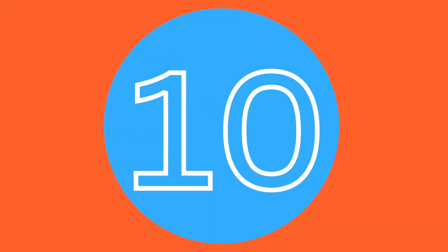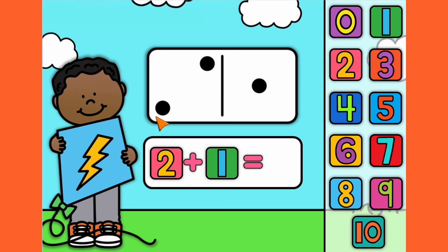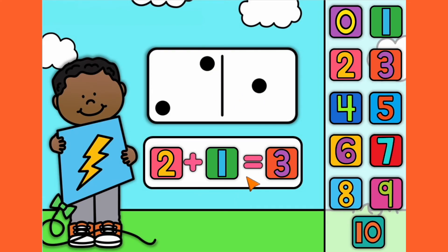Number 10. 1, 2, 1. Let's count them all together. 1, 2, 3. 2 plus 1 equals 3.